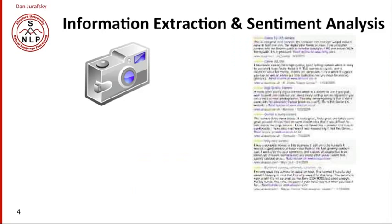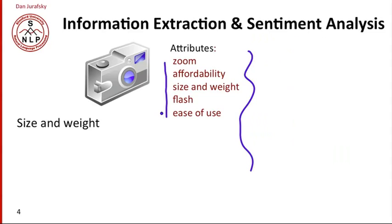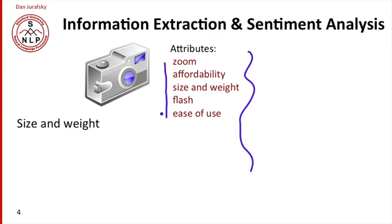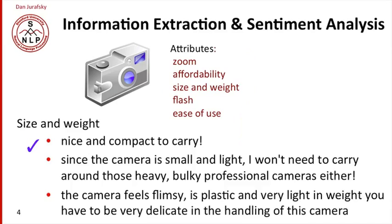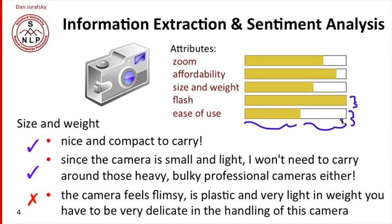Another application involves sentiment analysis. Imagine that you're interested in cameras and you're reading a lot of reviews on the web. We'd like to automatically determine from the reviews what people care about — particular attributes like good zoom, affordability, or size and weight. Then for any particular attribute, we want to determine how the reviewers felt. For example, 'nice and compact to carry' is positive sentiment, while 'flimsy' is negative sentiment. We'd like to automatically detect sentiment per sentence, then aggregate for each feature — say zoom or affordability — measuring positive and negative sentiment about each attribute.